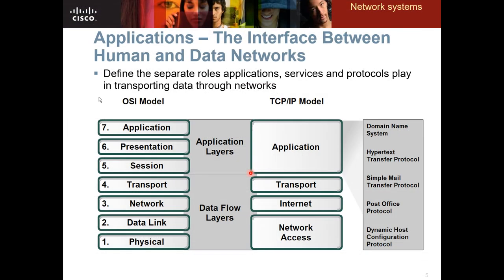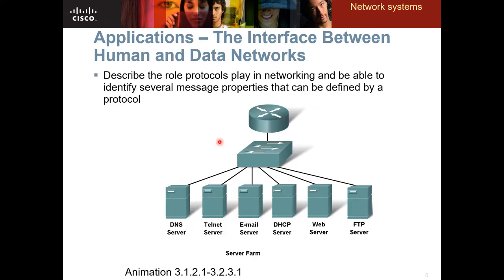Comparing the OSI model to the TCP/IP model: the application layer in TCP/IP really consists of three OSI layers — application, presentation, and session. In the OSI world, each of these layers has a defined individual function. In the TCP/IP model, the application layer accounts for all three. In this lecture I'm only discussing the application layer itself.